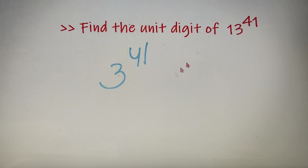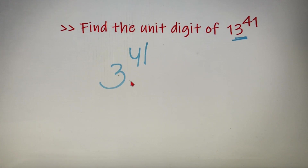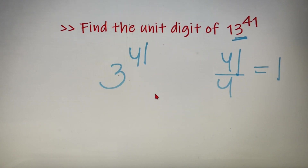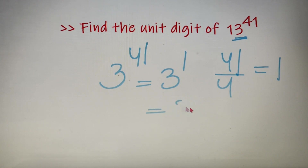Whatever may be the length of the number, we are only concerned with the last digit for finding out its unit digit. Now we know that the cyclicity of 3 is 4, so we divide 41 by 4 and get the remainder as 1. So 3 raised to the power 41 gives the same unit digit as 3 raised to the power 1, which is 3 itself. So the unit digit of 13 raised to the power 41 is 3.